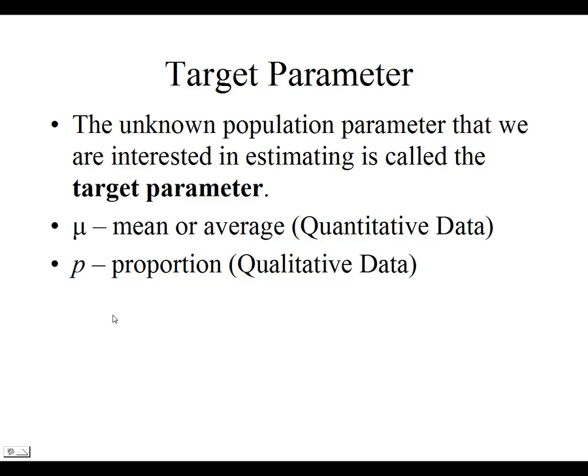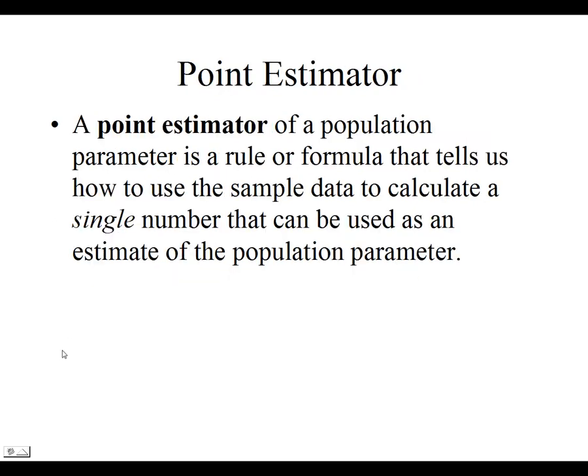And if we're dealing with proportion, the proportion we're going to deal with is the letter p. It's going to be our population proportion p. We need something to estimate those population parameters. We use x̄ to estimate the population mean μ, and we're going to use p̂ to estimate the population proportion p.